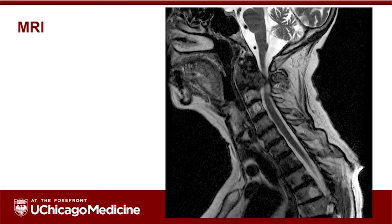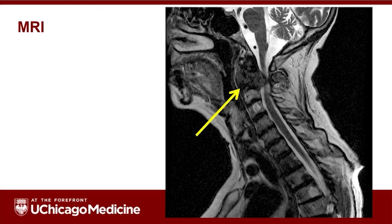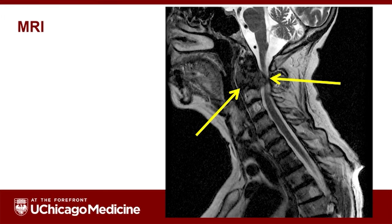An MRI can be a very helpful radiology test to help us look at very fine anatomic detail of the bone and surrounding structures. Here is an MRI of a patient with neck pain, along with arm pain and weakness. This MRI of the spine helps us to see not only the bone tumor, but also how it's pressing on the spinal cord.